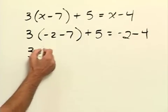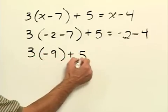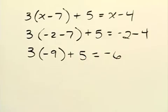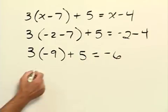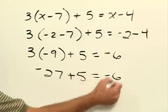We're going to have 3 times negative 9 plus 5 equals negative 6. Multiply this part out now and we'll have negative 27 plus 5 equals negative 6.